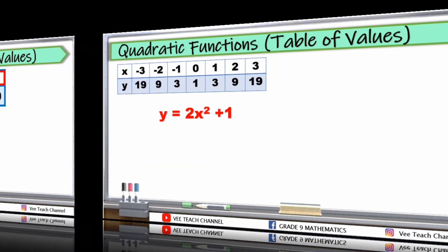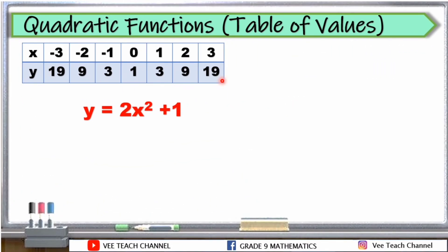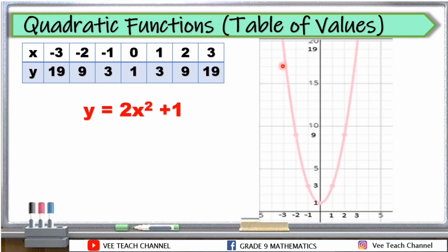Kaya dun natin nakumpleto ang table of values. Just substitute the values of x to our equation to get the value of y. Ngayon, papaano naman natin ito i-graph? Ito yung magiging graph ng ating quadratic function. Sa pag-graph, lagi tayong unang titingin sa x — yung x natin sa Cartesian plane, ito yung horizontal line. Dyan muna tayo titingin sa x-axis natin, tapos saka tayo titingin sa value ng y-axis natin or dun sa vertical line. Kaya negative 3, tapos sa 19 — yun yung magiging point natin.